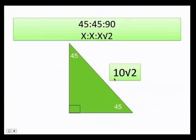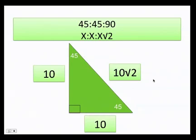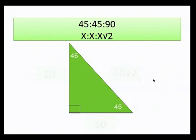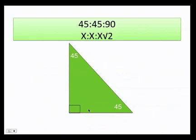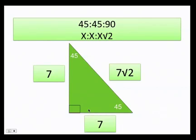What if the hypotenuse is 10√2? Then one side is 10 and the other side is 10. If a side is 6, the other side is also 6, and the hypotenuse is 6√2. If a side is 7, the other is 7, and the hypotenuse is 7√2. Remember: anytime you have a 45-45-90 triangle and they give you a leg, you can find the hypotenuse just by following the x : x : x√2 ratio.